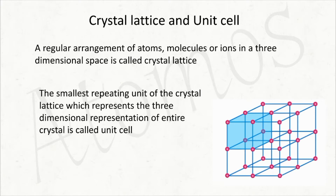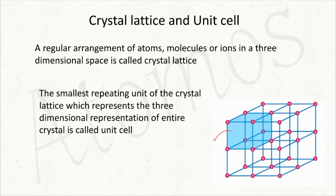Before going to the trick, you should have a clear idea about what a crystal lattice and a unit cell are. If a solid is crystalline in nature, it will have a regular arrangement of atoms, molecules, or ions in three-dimensional space — that is known as a crystal lattice. The smallest repeating unit of a crystal lattice is called a unit cell.